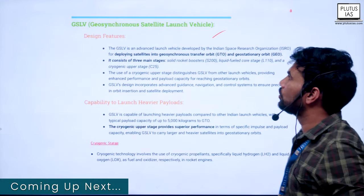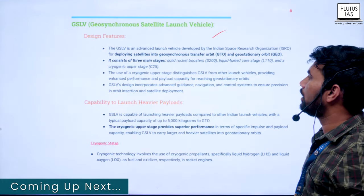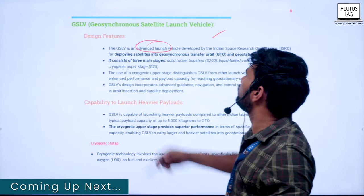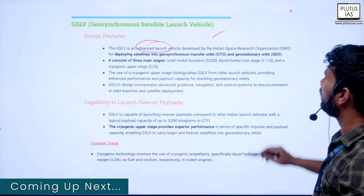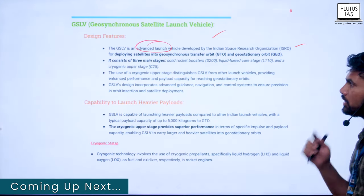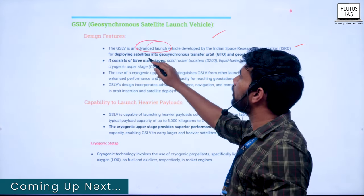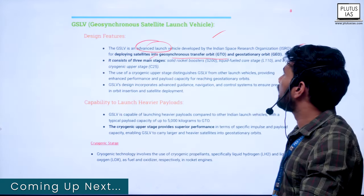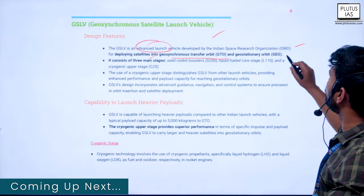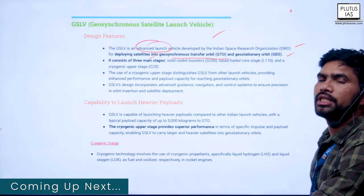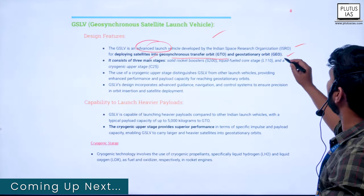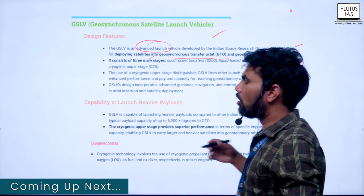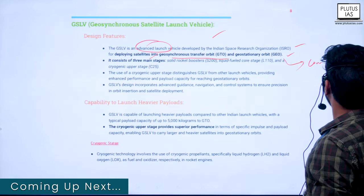GSLV, the Geosynchronous Satellite Launch Vehicle, is an advanced launch vehicle developed by the Indian Space Research Organization. It is used for deploying satellites into geosynchronous transfer orbit and geostationary orbit. The satellites placed in these orbits are primarily communication satellites.